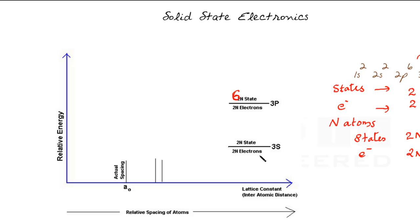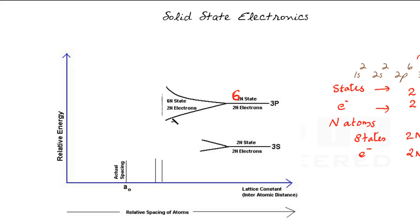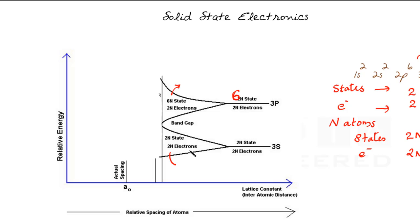As the atoms come closer and closer, the energy levels split — the splitting first happens in the outer shell. The energy levels essentially form two bands: an upper band and a lower band. The upper band has 6n states and 2n electrons, and the lower band has 2n states and 2n electrons.